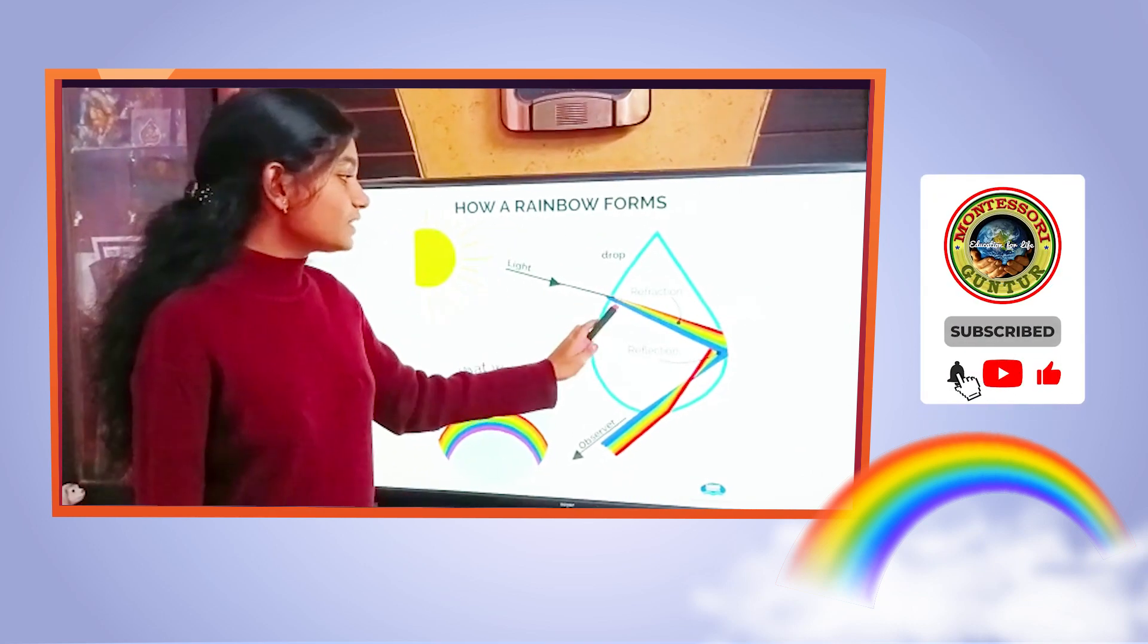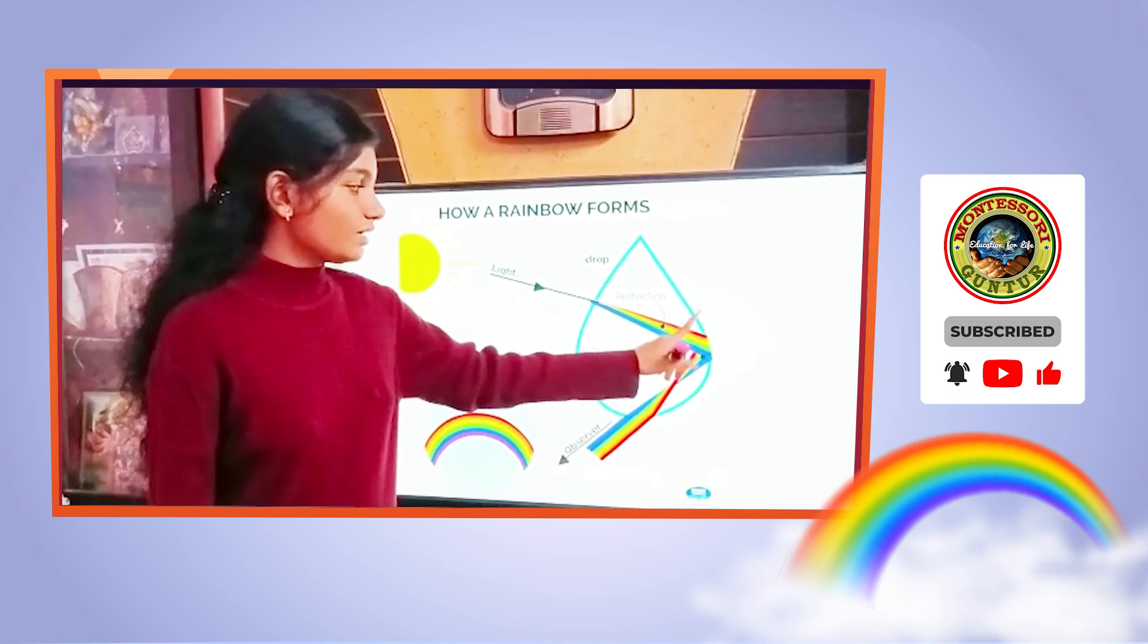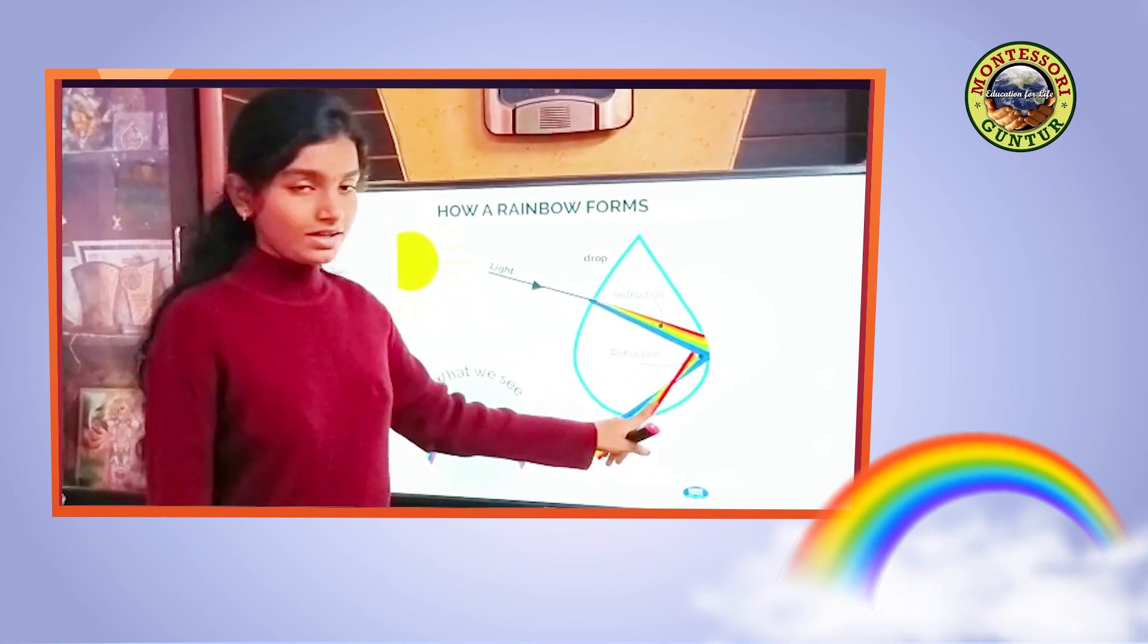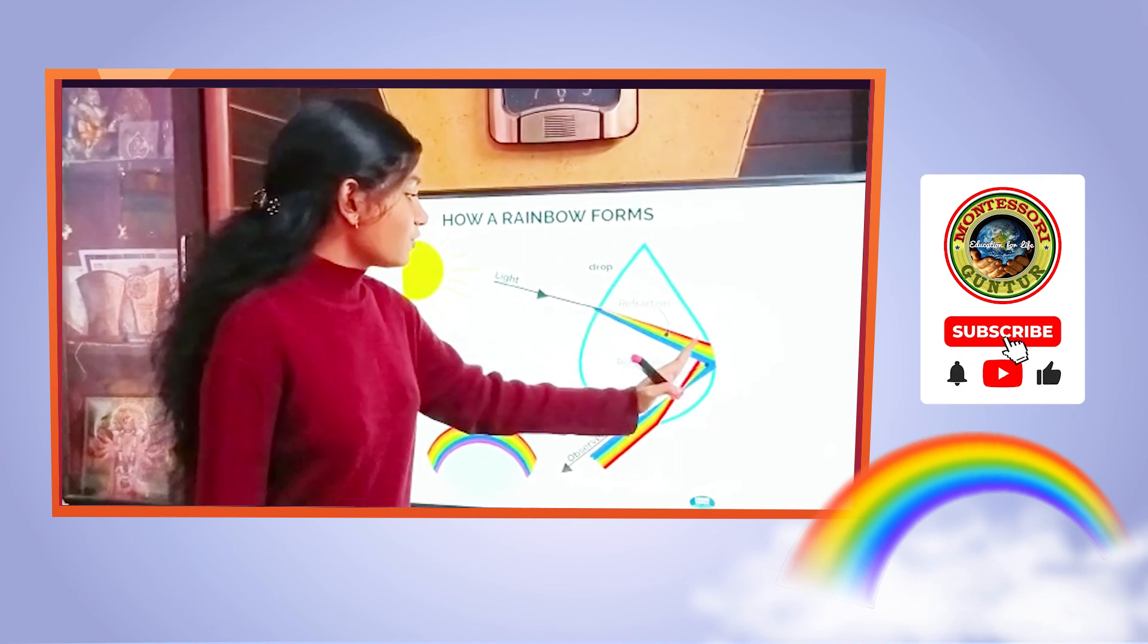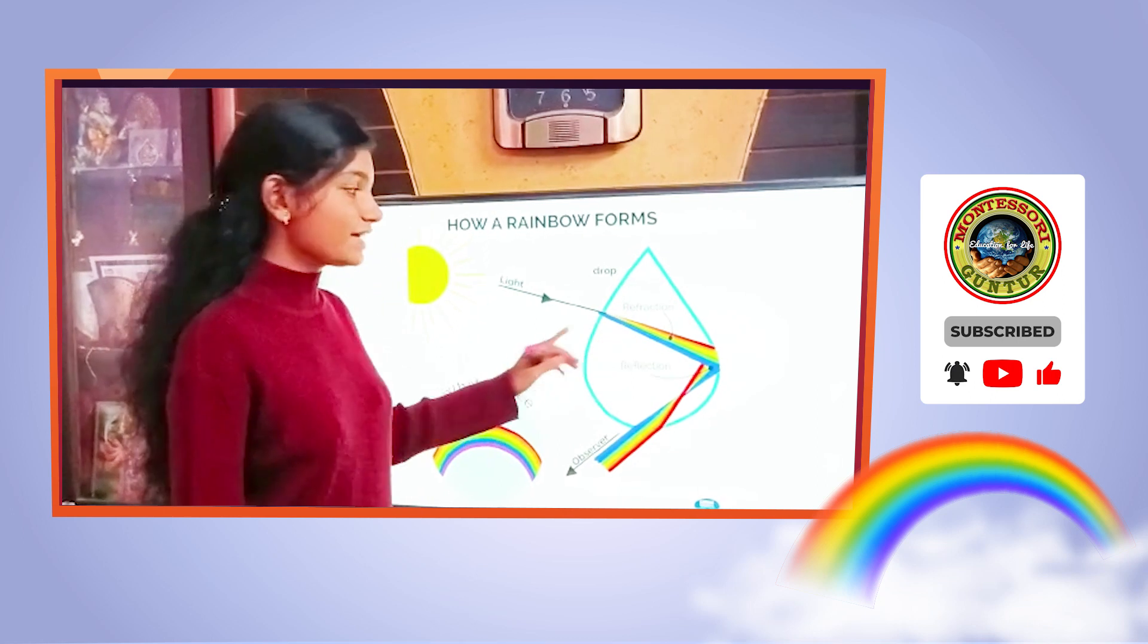The sunlight enters into the raindrop and the light refracts and is dispersed into different colors. The different colors happen at different angles. When these different colors fall on the back surface of the raindrop, it reflects internally.